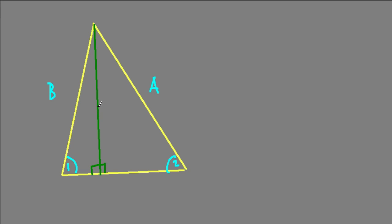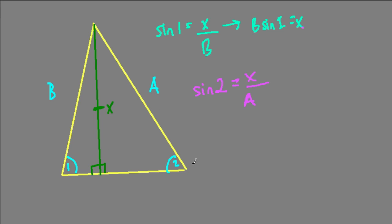Now we can deal with sine the way we know how to with right triangles: the sine of an angle equals the opposite side over the hypotenuse. Let's call the altitude X. We know that the sine of angle 1 equals the opposite X over the hypotenuse B. So if I multiply both sides by B, I get B times the sine of angle 1 equals X. And then the sine of angle 2 equals its opposite X over A, the hypotenuse of this triangle.